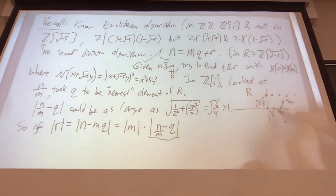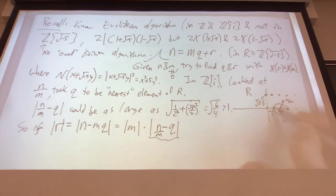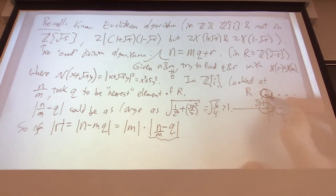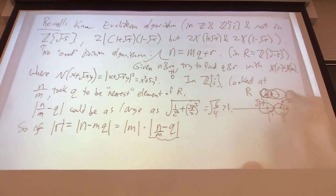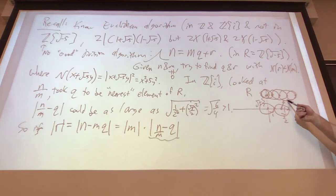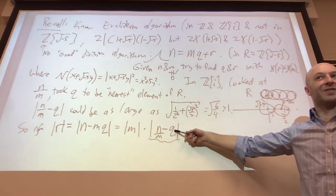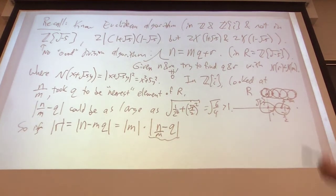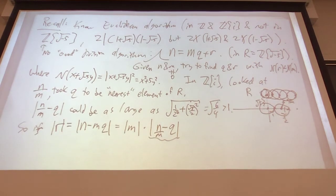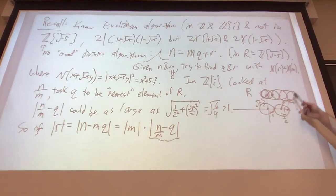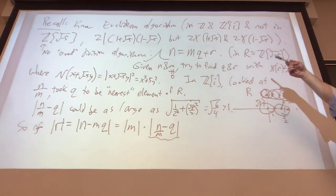If I draw unit circles around lattice points, there are places that are missing. And if there are places that are missing, then you can't always do the division algorithm. So if you can't do the division algorithm, you can't run the Euclidean algorithm, you can't make it a principal ideal domain, you don't have unique factorization. That's everything that's going wrong — it's the geometry of this ring, this lattice, that's not allowing us unique factorization.